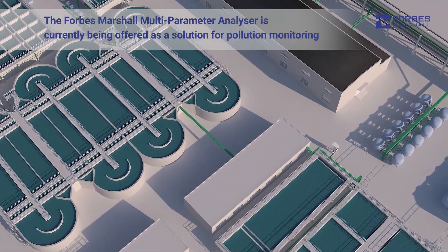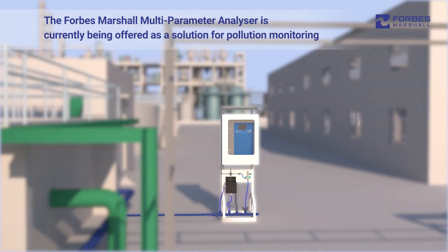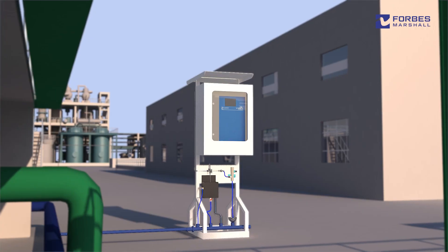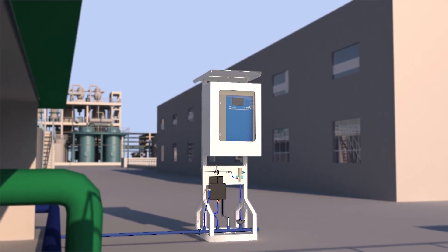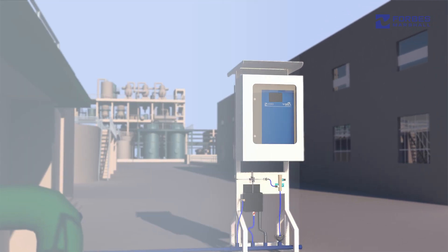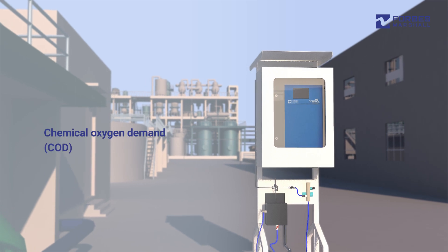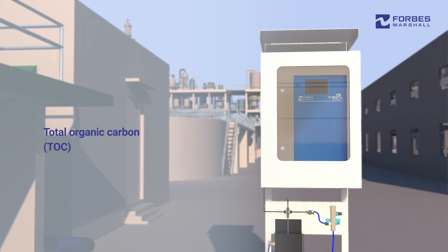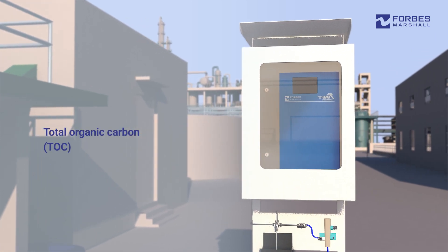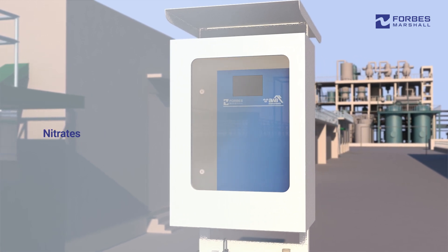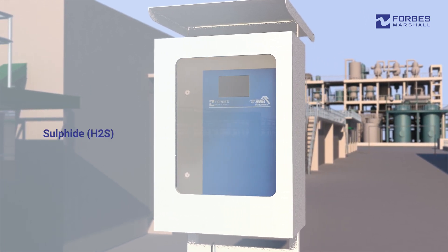The Forbes Marshall multi-parameter analyzer is currently being offered as a solution for pollution monitoring. The Forbes Marshall CX1000 multi-parameter analyzer is used to analyze specific parameters like ammonia, COD, BOD, TOC, hydrocarbons, nitrates, sulphide, oil in water, and phenol.